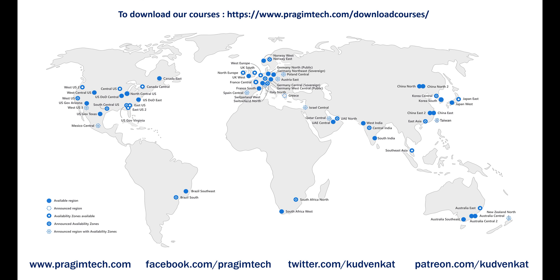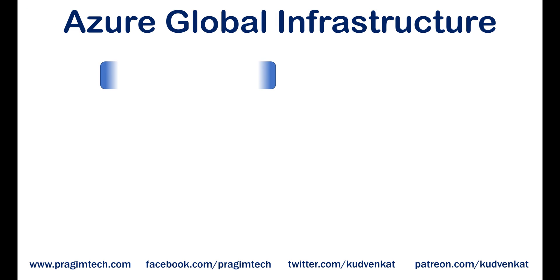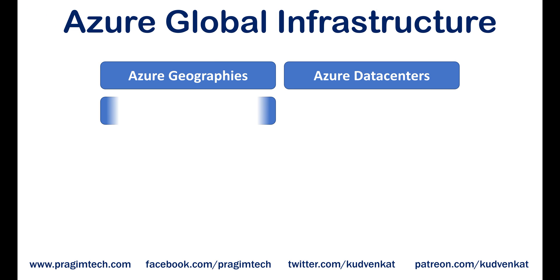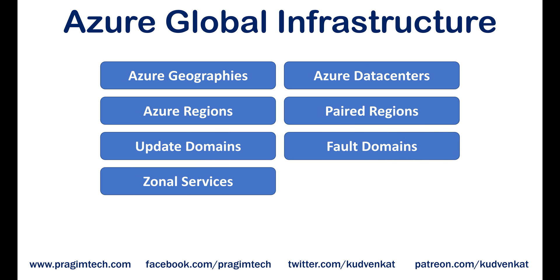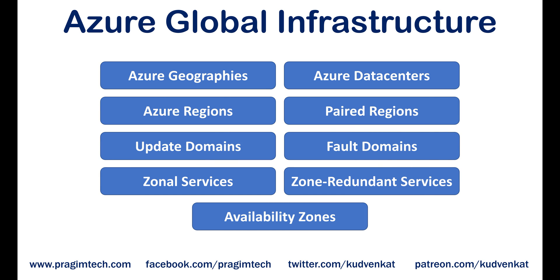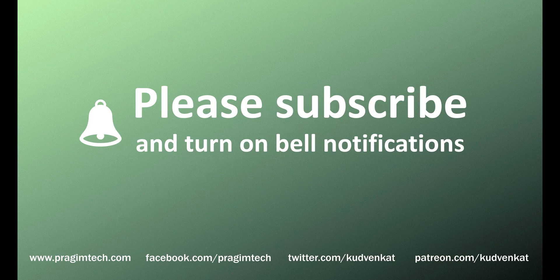On the map shown here, you can see the currently available Azure regions and availability zones. In this video, we've covered quite a bit of ground. Please don't worry if some of the terms and services are a bit confusing at the moment — we will be revisiting most of these several times as we progress through the course. You'll also see them practically in action, so you will get quite comfortable with them. That's it in this video. Thank you for listening.